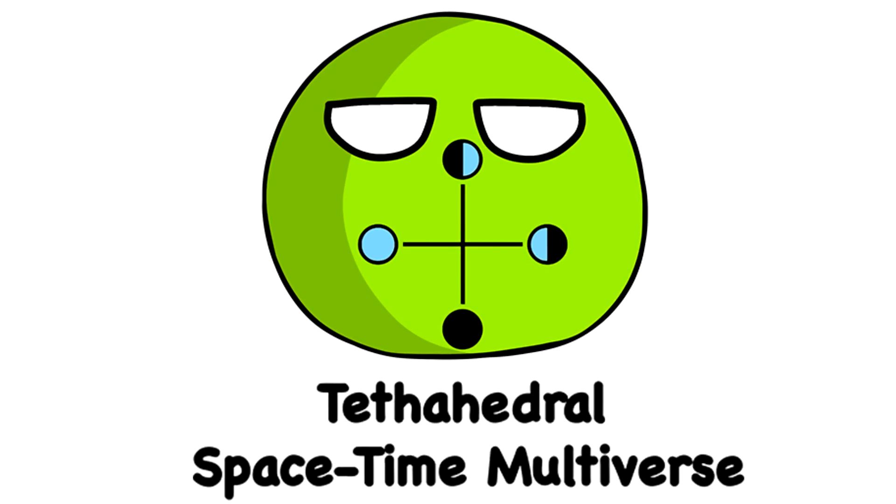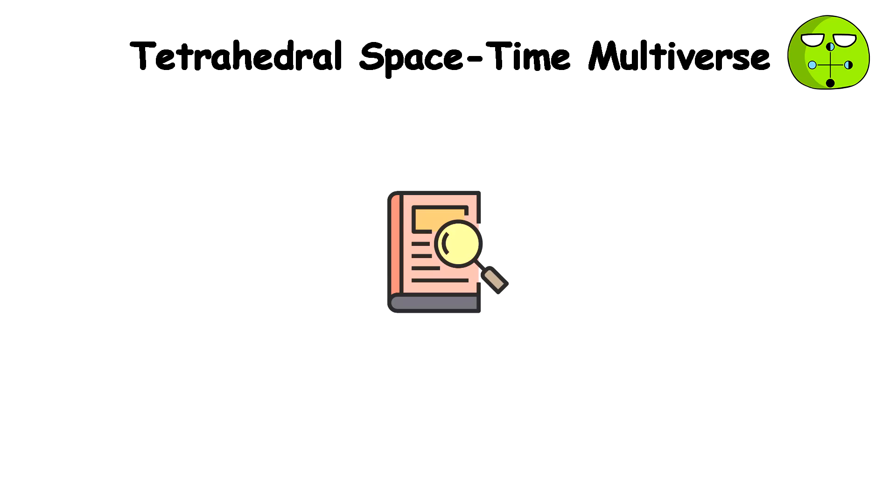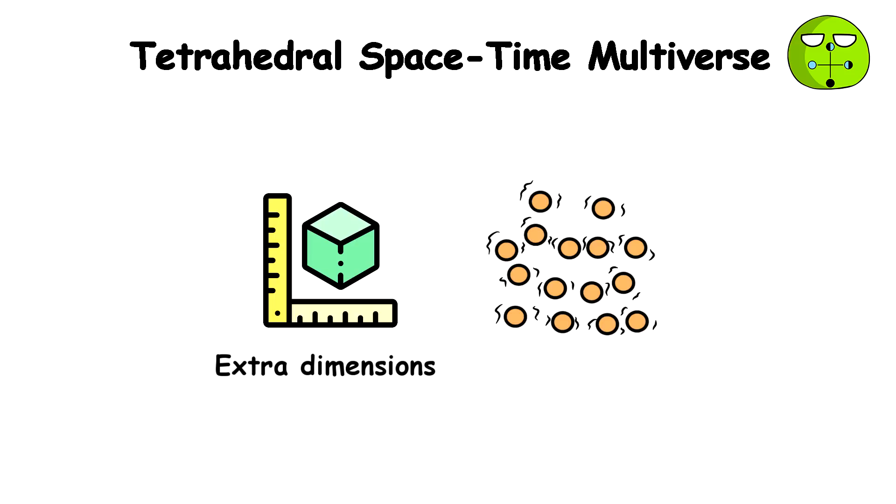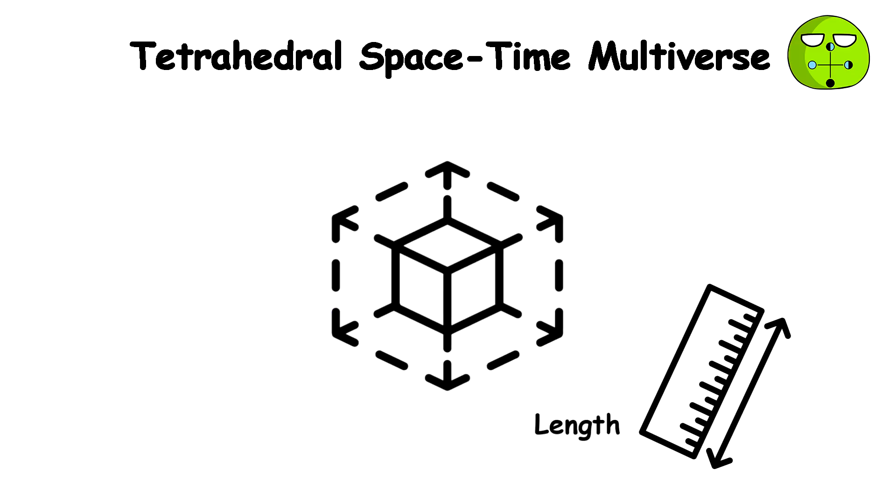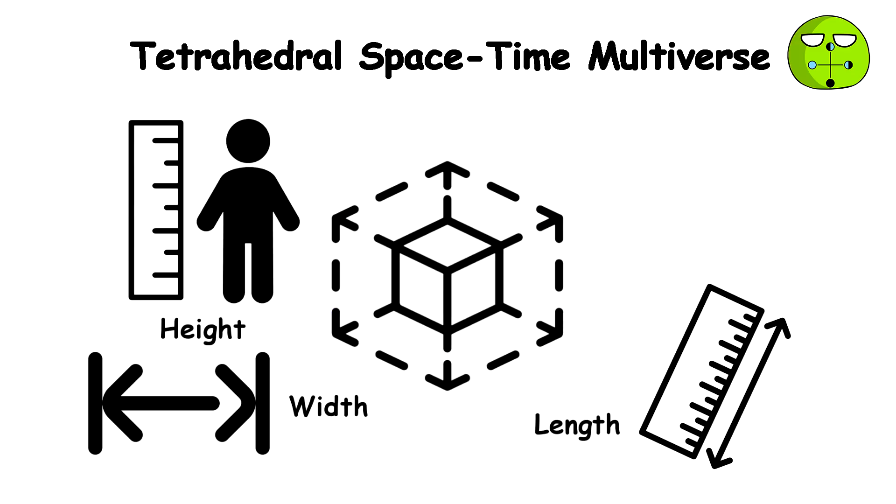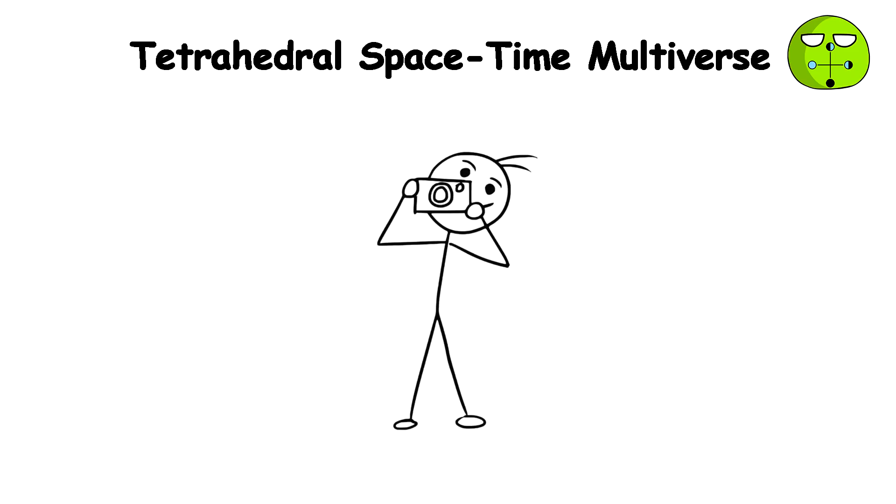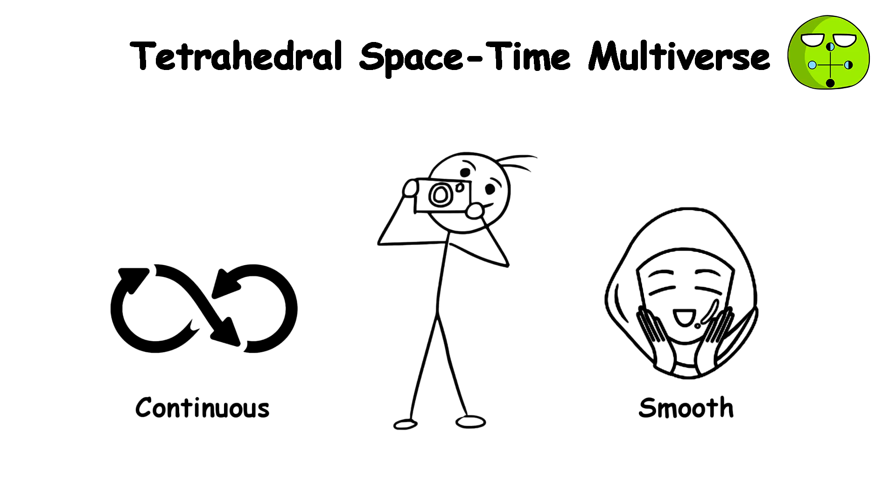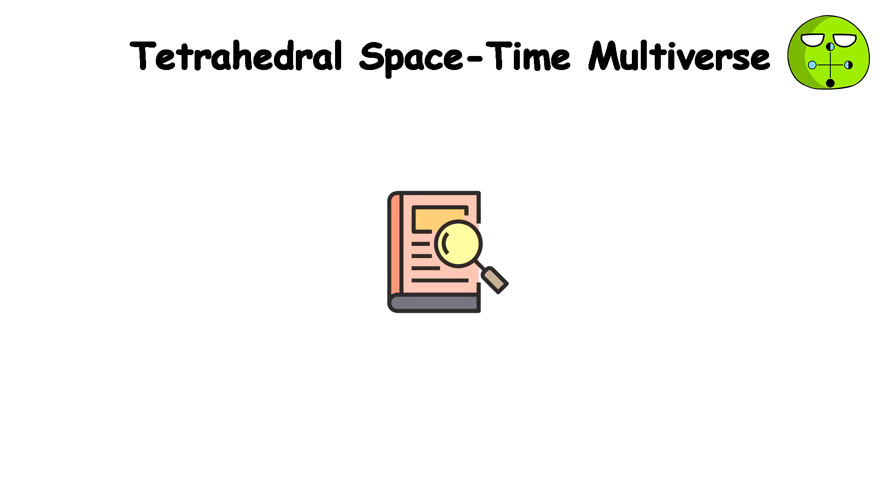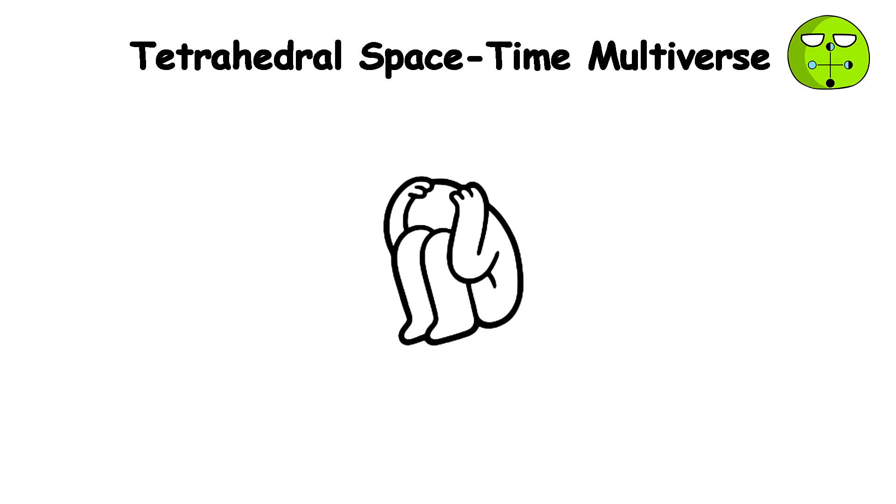Tetrahedral Spacetime Multiverse. The tetrahedral spacetime multiverse theory explores the extra dimensions that string theory proposes beyond our familiar 3D space of length, width, height, and 1D time forwards. Instead of picturing these extra dimensions as smooth and continuous, this theory suggests they might be curled up in a specific way, the shape of a tetrahedron, a pyramid with triangular faces.